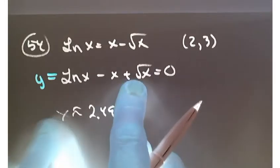So x is about 2.491. Notice the intermediate value theorem only says that this value is going to exist.